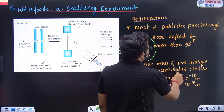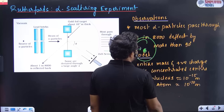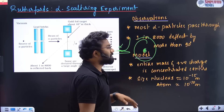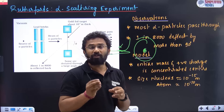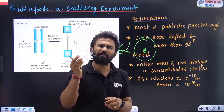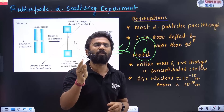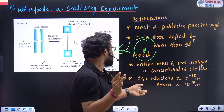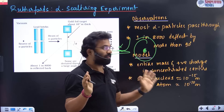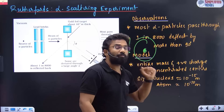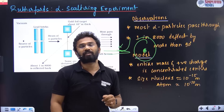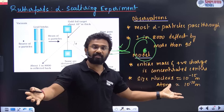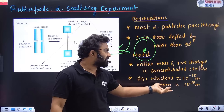The entire mass and positive charge is concentrated at the center — the nucleus. From this we understand the nucleus size is very, very small. The atom is about 10 to the power minus 10 meters, and the nucleus is about 10 to the power minus 15 meters.